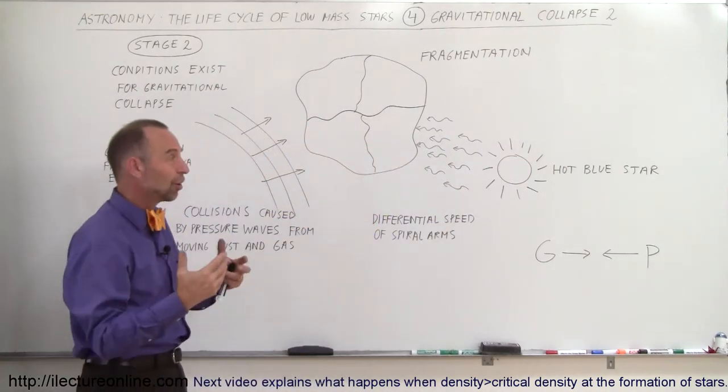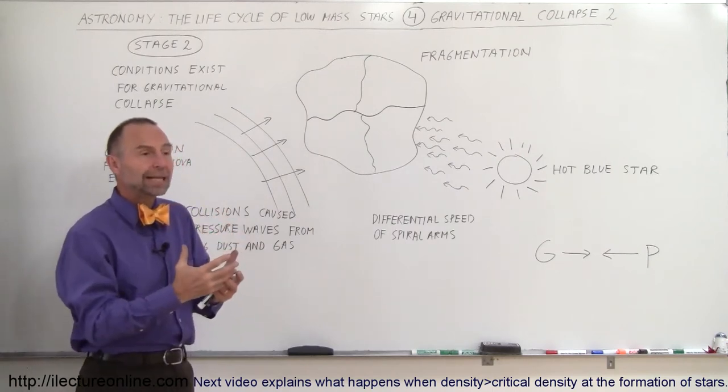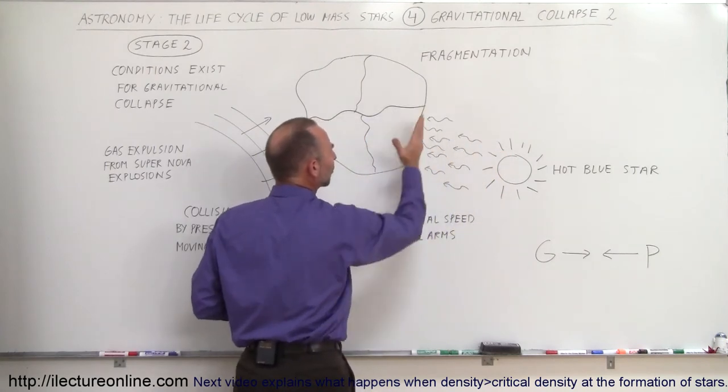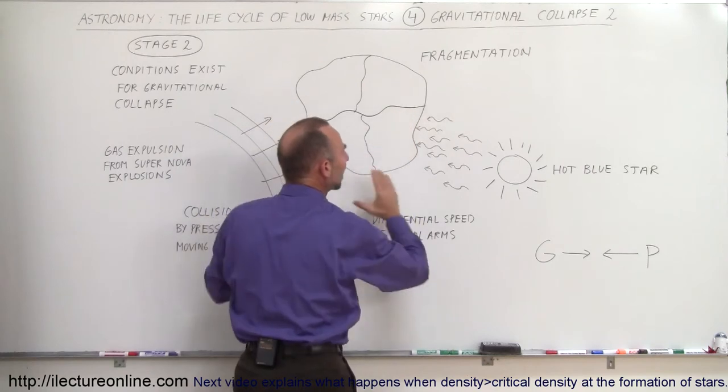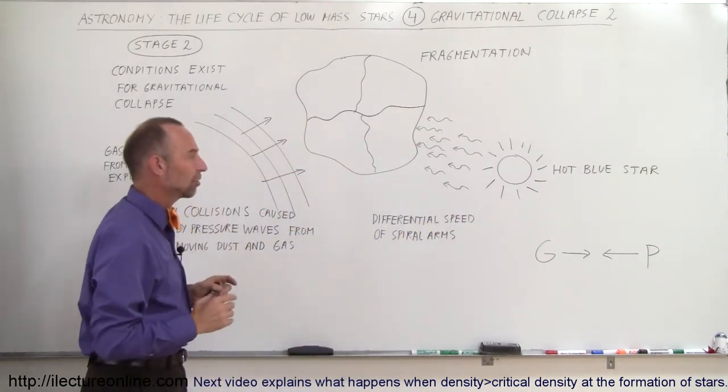Blue stars that are very high temperatures put out enormous quantities of light and also UV radiation. And that radiation pressure would collide with a region of dust and gas, pushing that dust and gas closer together, increasing the density. So external influences are almost always necessary to get this process to take place.